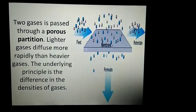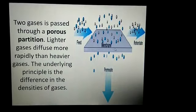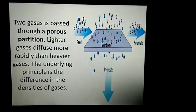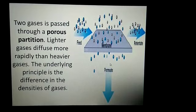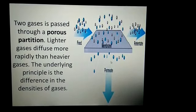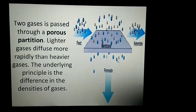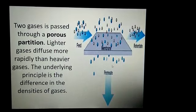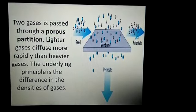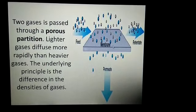The mixture is passed through a porous membrane or partition, and the lighter one — the gas which has low density — gets separated. The retentate and permeate, meaning the lighter and the heavier gas particles, are separated when passed through a porous membrane.